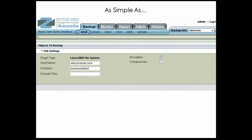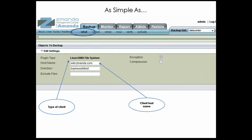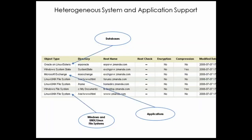To tell AMANDA Enterprise what to backup, we start by creating a backup set. A backup set contains all the details necessary for AMANDA Enterprise to know how to backup a set of clients. To add a client to the backup set, all you need to do is specify the client type, the host name of the client, and enter the directory on the client you want to backup. AMANDA Enterprise has clients for all major operating systems, including Microsoft Windows, Mac OS X, Linux, and Solaris.